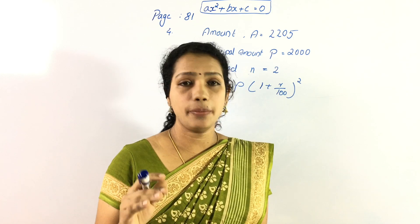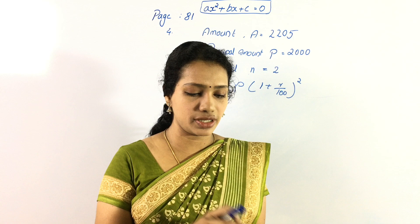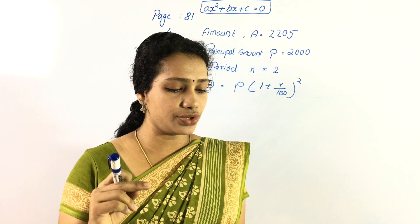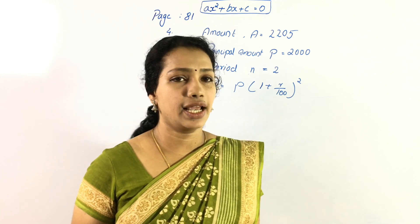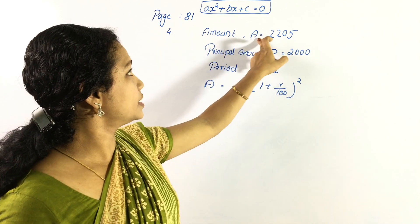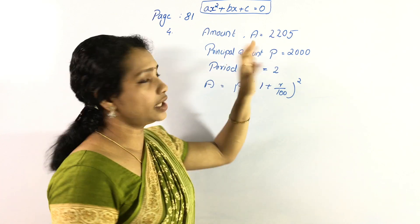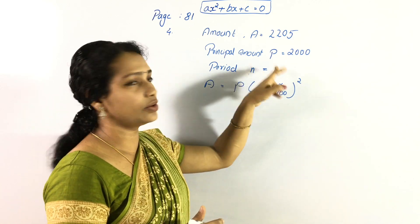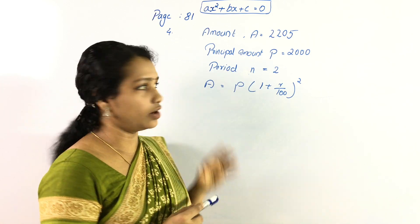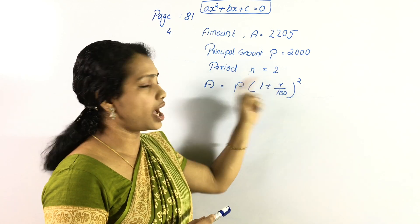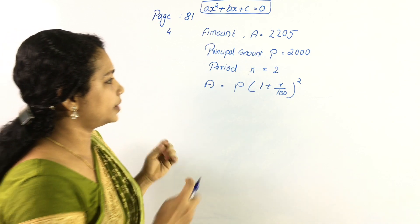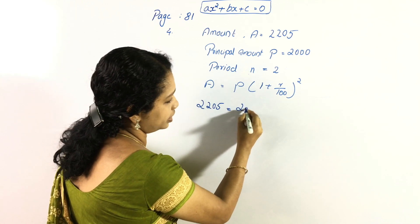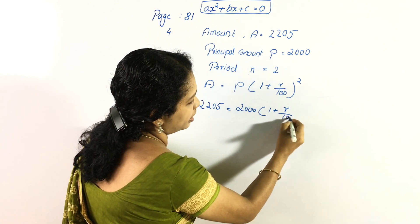Question number 4, compound interest: 2000 rupees was deposited in a scheme where interest is compounded annually. After 2 years the amount was 2205. What is the rate of interest? The principal P = 2000, number of years N = 2. We substitute into the compound interest equation: 2205 = 2000 × (1 + r/100)².